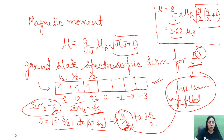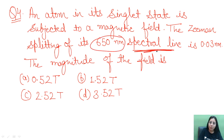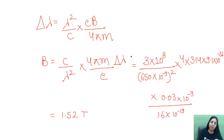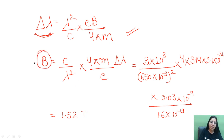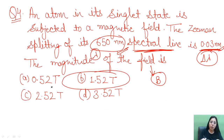The fourth question: an atom in a singlet state is subjected to a magnetic field. Given the Zeeman splitting Δλ of a spectral line at wavelength λ, find the magnetic field B. The formula relating wavelength shift to magnetic field is used. Rearranging the terms and substituting the given values gives B ≈ 1.52 Tesla as the final answer.